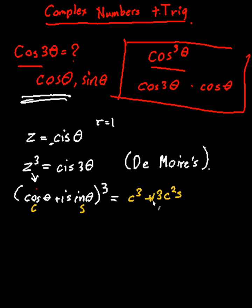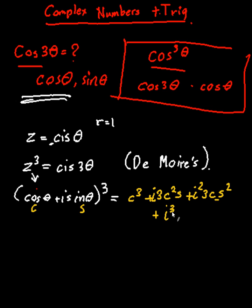The third term is 3c times s squared, with an i squared factor which I'll write separately. The last term is i cubed times s cubed. If you're wondering where these coefficients come from, this is simply the binomial expansion of a polynomial — you'd need to look that up, but these are the coefficients you get.